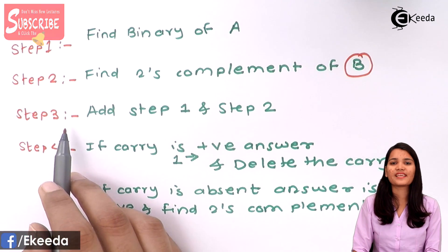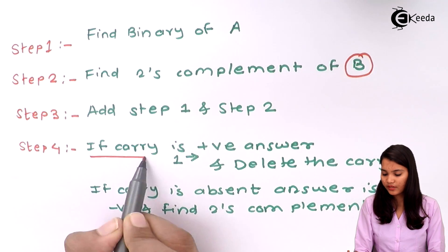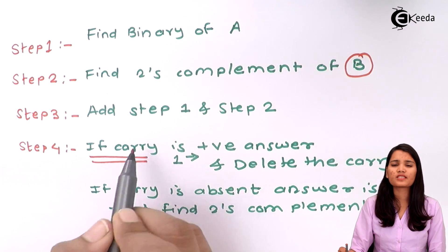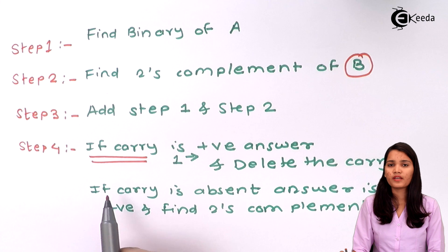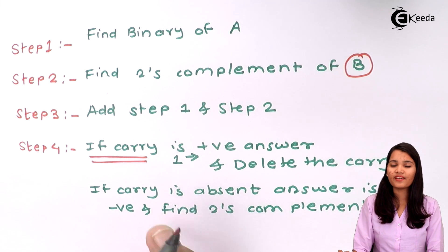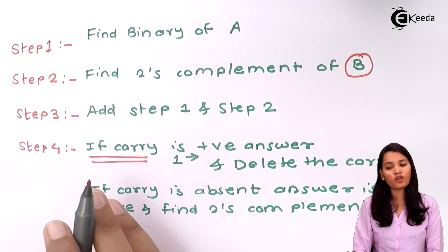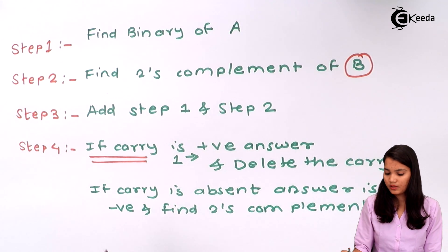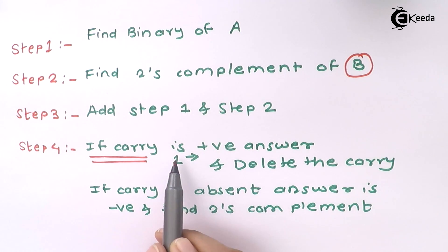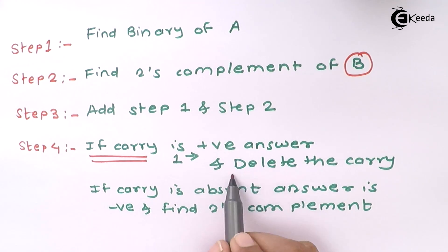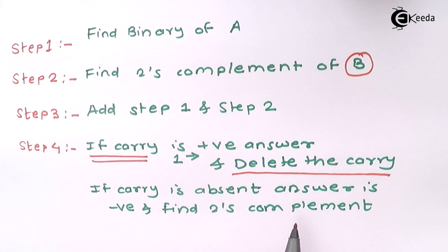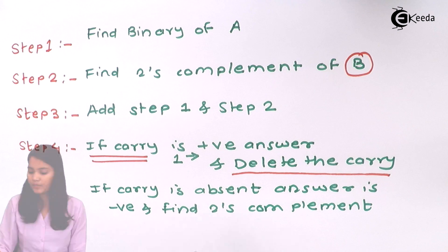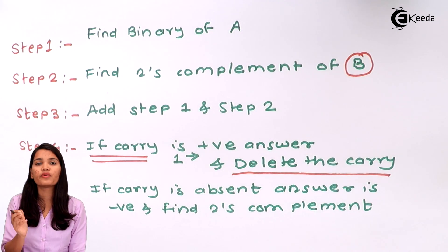Step number 3 is to add the results of step 1 and step 2. This is a very important step — from this step you can decide whether your answer is going to be positive or negative. If the carry is 1, then the answer is positive. In the 1's complement method we used to perform end-around carry — adding the carry back into the answer. But here in 2's complement, we simply delete the carry and directly get the answer. There is no end-around carry needed.